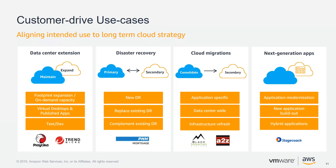Application modernization goes along a similar story. If the back-end of a three-tier application is being completely rewritten — perhaps to a microservices-based architecture using Kubernetes and containerization — you still have a desktop component that needs access. The same benefits apply. We're seeing all of these use cases with VDI on VMware Cloud on AWS.